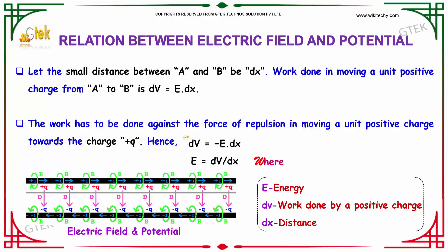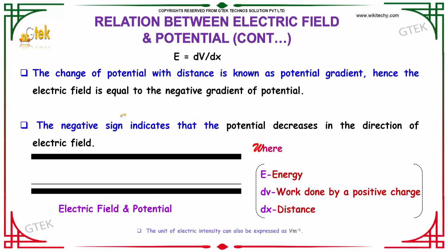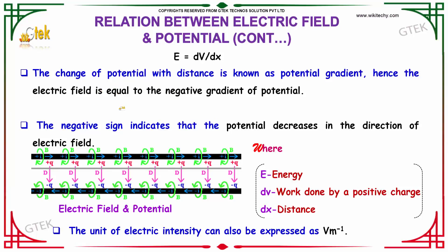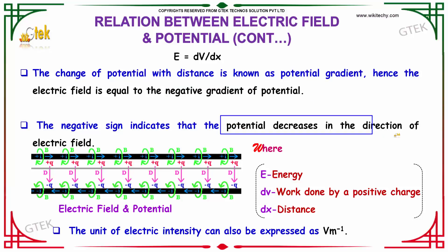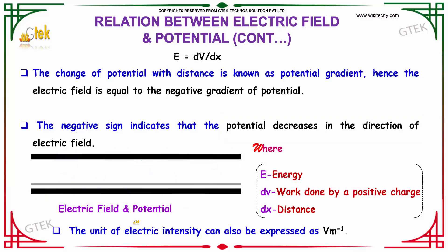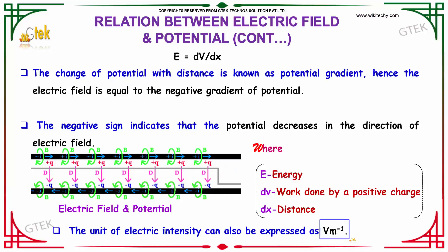From this we can write dV = -E·dx, and from this we can obtain the value of E, which is E = dV/dx. The change of potential with respect to distance is known as the potential gradient. Hence, the electric field is equal to the negative gradient of its potential. This negative sign indicates that the potential tends to decrease in the direction of the electric field. The unit of electric field intensity is expressed as V·m⁻¹, that is, volt per meter.